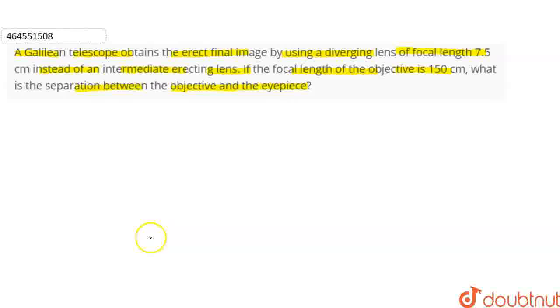A Galilean telescope obtains an erect final image by using a diverging lens with focal length 7.5 cm instead of an intermediate erecting lens. The focal length of the objective lens, Fo, is given as 150 cm.